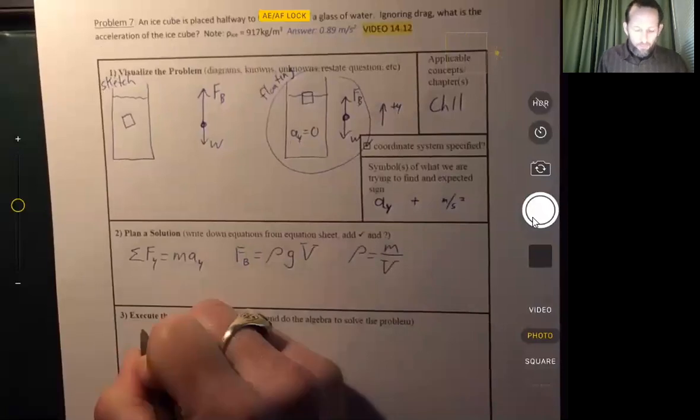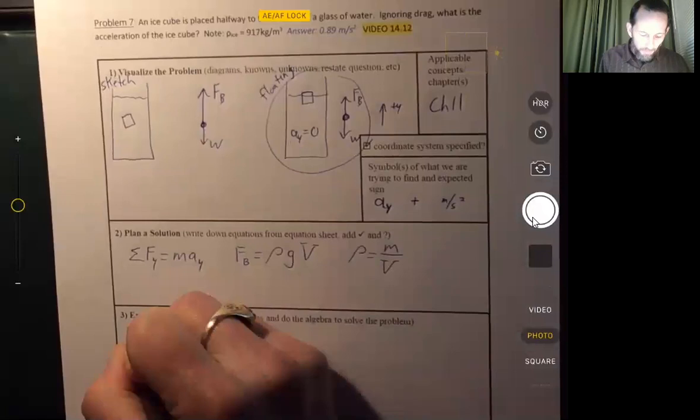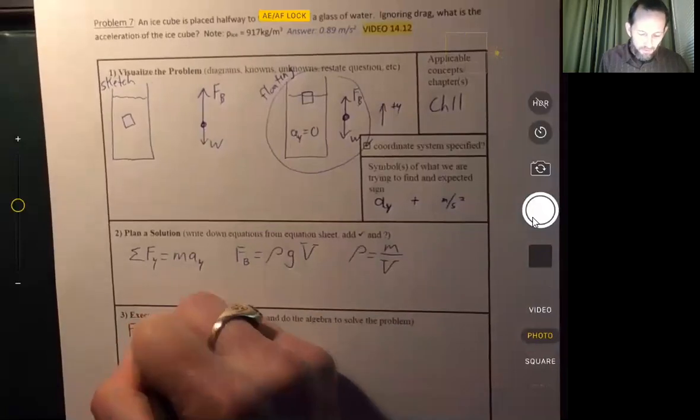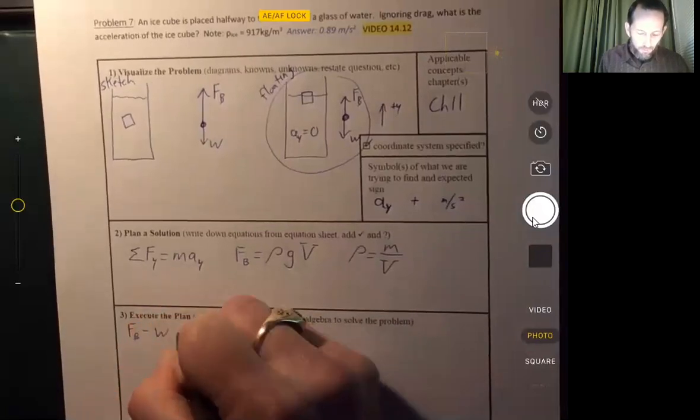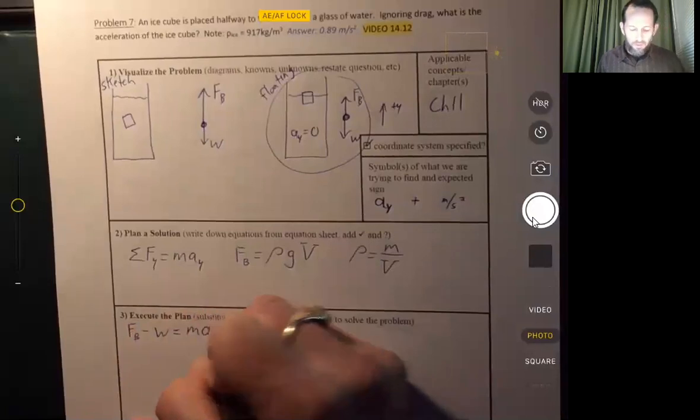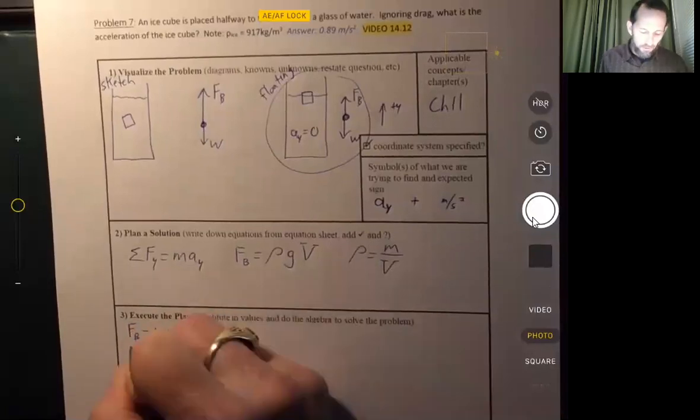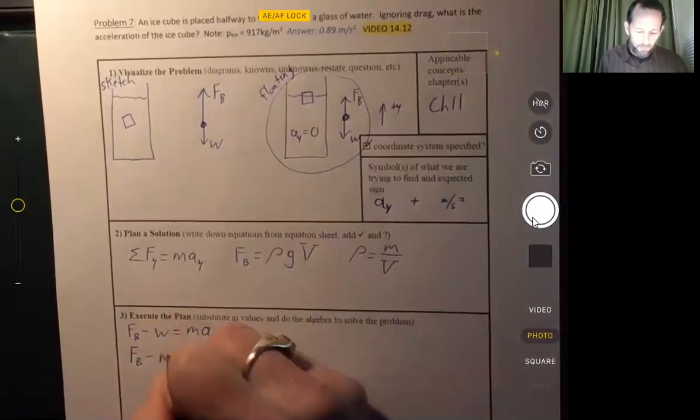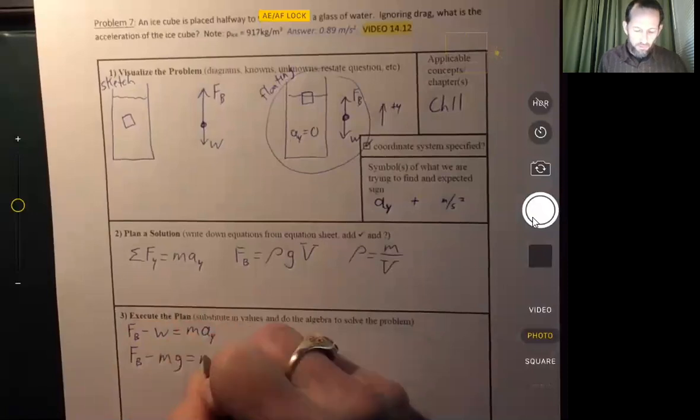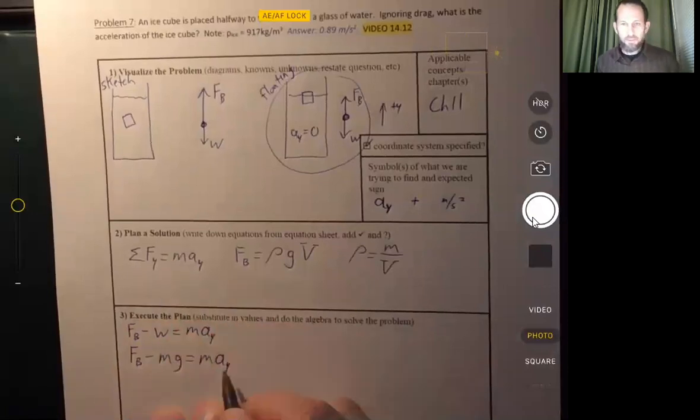Now let's go ahead and sum the forces in accordance with Newton's second law of motion. So FB minus W equals M A Y. Or we could write it as FB minus M G equals M A Y. So we're trying to solve for A sub Y.